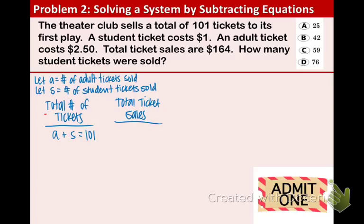Our second equation deals with the price of each ticket. The adult ticket is $2.50, so we multiply the price by the number of tickets: 2.5a. The student ticket is $1.00, so 1 times S. The total ticket sales are $164. So our two equations are: a plus S equals 101, and 2.5a plus 1S equals 164.